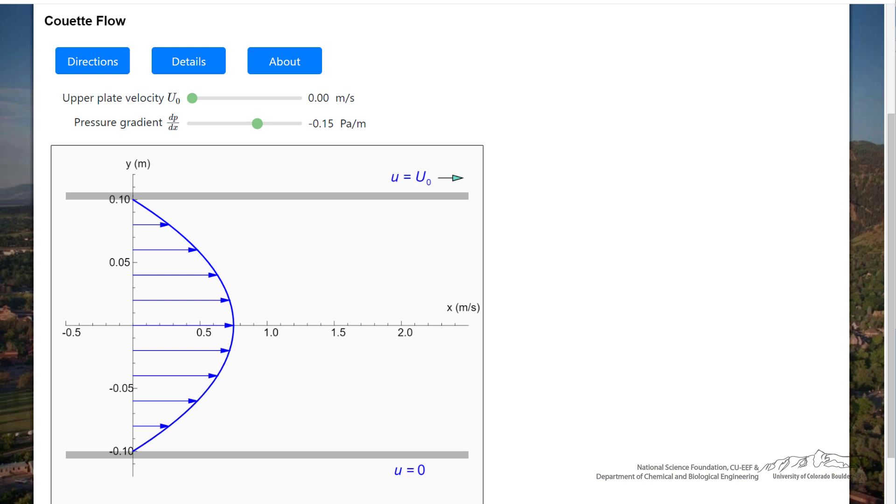Let's look at this simulation. If we have no pressure gradient, and let me stop it at zero, and I move the top plate to the right, then we're going to have a velocity gradient, and notice that it's linear.